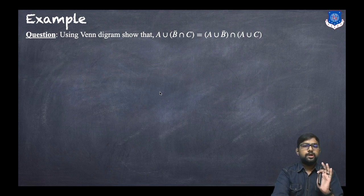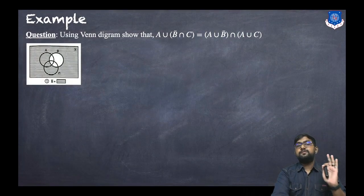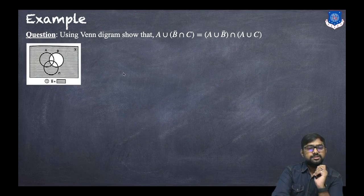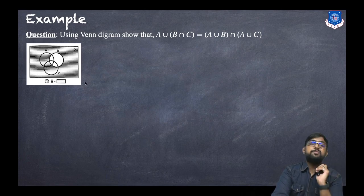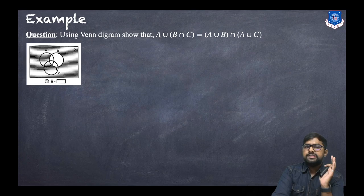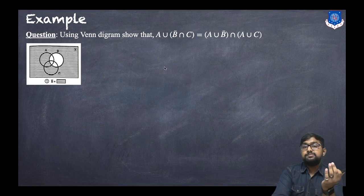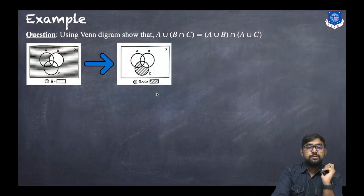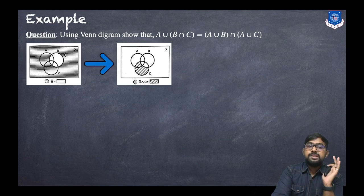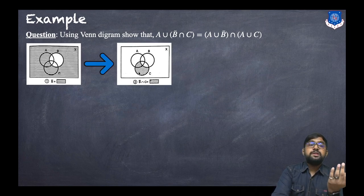For the left-hand side, the first step is to find B̄ ∩ C. First, what is B̄? We have three sets A, B, C. B̄ is everything except B — the shaded part outside B. That is B̄. The second step is to find B̄ ∩ C: we take B̄ and intersect with C, and the intersection gives us the shaded overlap — that is B̄ ∩ C.